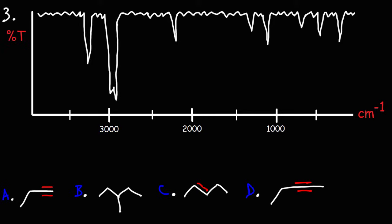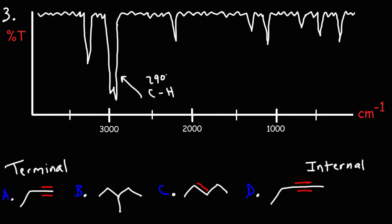Now let's move on to number 3: identify the molecule that corresponds to this IR spectrum. Looking at our answer choices, we have either an alkane, an alkene, or an alkyne — including a terminal alkyne, where the triple bond is at the end of the molecule, and an internal alkyne. We have our typical C-H stretch at 2900, but note that we have a signal here around 2200, which corresponds to the C≡C alkyne stretch. So we do have an alkyne — we can eliminate answer choices B and C.